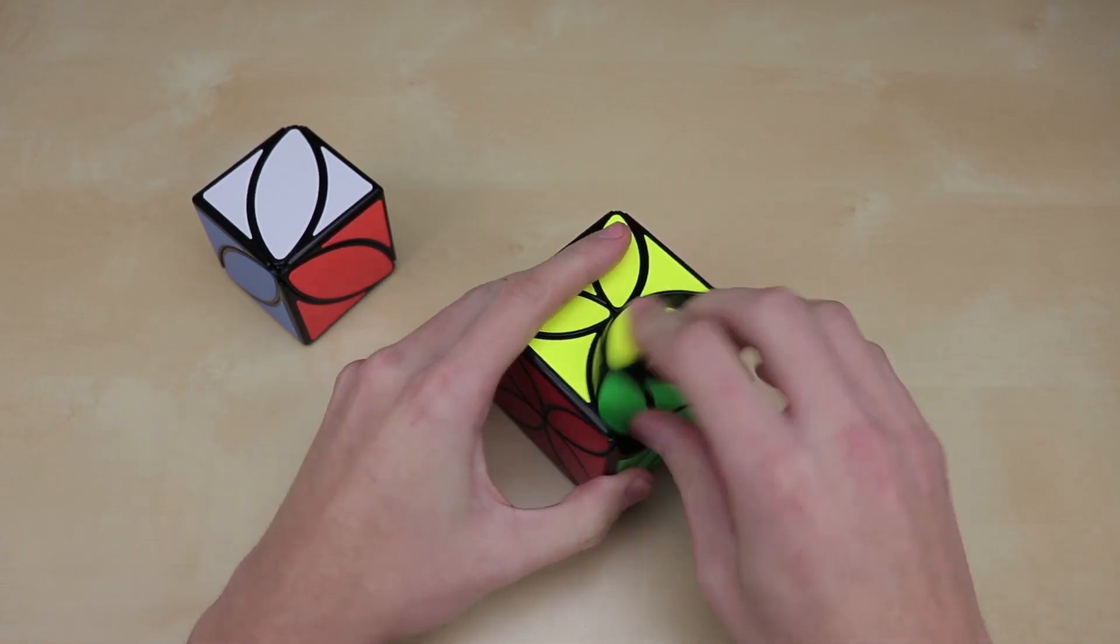But I believe the puzzle that this is most similar to is the Curvy Copter, which is a version of the Helicopter Cube. It's also an edge-turning puzzle, as you can see here. Basically, this one is just this, but it's not cut quite as deep.